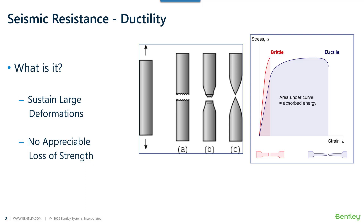Looking at the images on the left-hand side: Figure A shows brittle failure, where the failure is sudden and the entire cross-section has failed abruptly. Figure B shows some necking followed by brittle failure, meaning ductile behavior has begun but is not complete. Figure C shows breakage after considerable necking with a very small remaining cross-section, which represents complete ductile behavior.